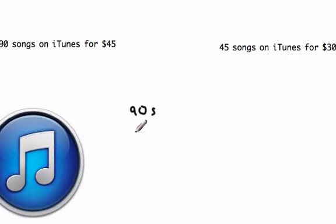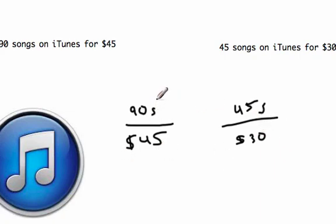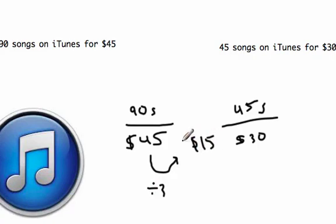I'll set these two equal to each other so we can see what that looks like. Ninety songs for forty-five dollars, and then — be careful — forty-five songs goes on top, and then we have thirty dollars here. It's tough to get from forty-five to thirty directly, but we can scale. If I divide forty-five by three I get fifteen bucks, and if I divide ninety by three I get thirty songs.